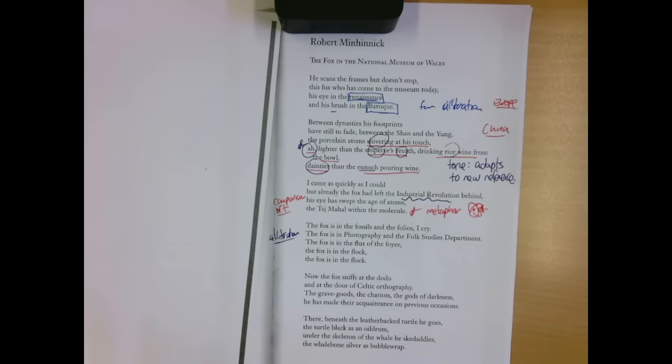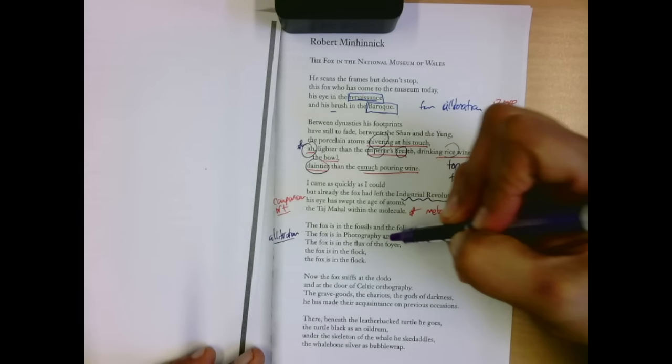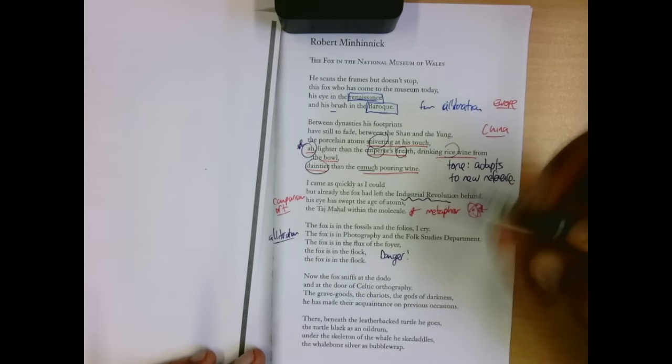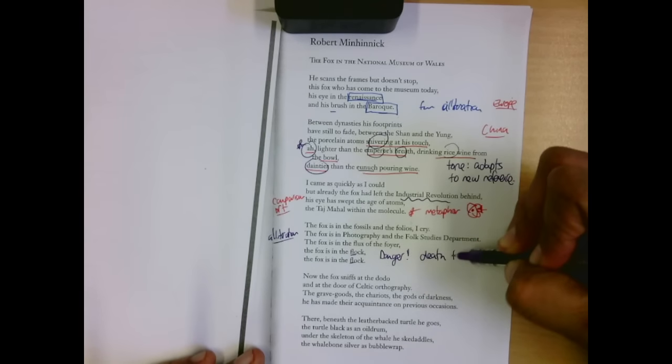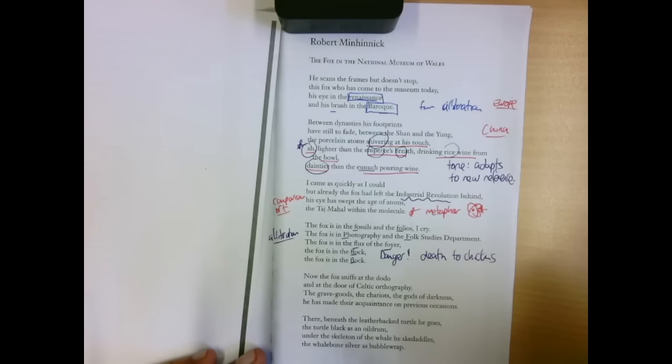The fox is in the fossils, in the folios I cry. The fox is in the photography, in the folk studies department. The fox is in the flocks, in the foyer. The fox is in the flock. Danger. The fox being in the flock might mean death to chickens. It's all right to be trite, but it does. Fossils, folios, photography, folk studies, flocks, foyer, flock. It's silly, it's fun. But it also shows you that alliteration can connect very vastly unconnected things in the same way a museum can.